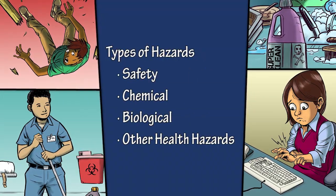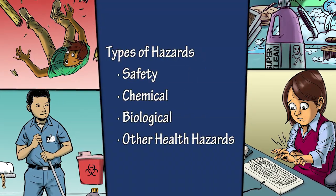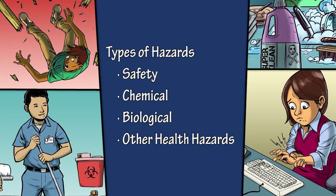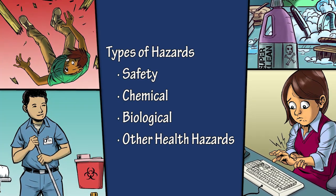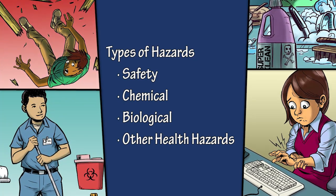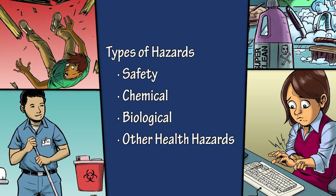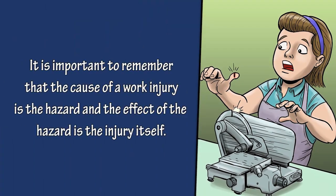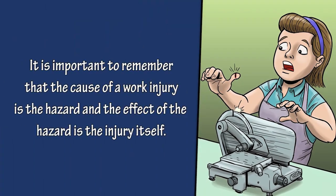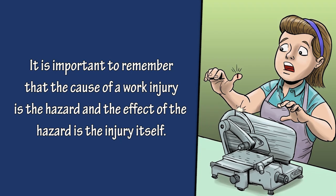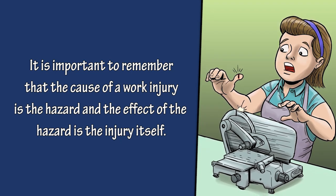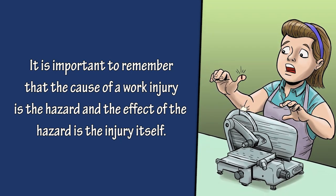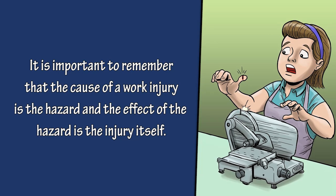To be safe on the job, you must be able to identify different types of hazards, which include safety, chemical, biological, and other health hazards. It's important to remember that the cause of a work injury is the hazard. The effect of the hazard is the injury itself. For example, a meat slicer is the cause, and a cut is the effect.